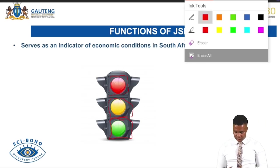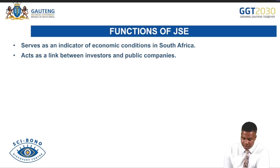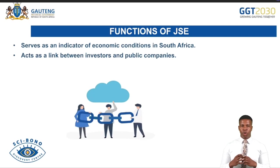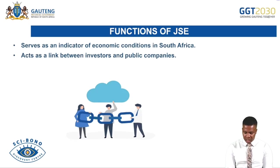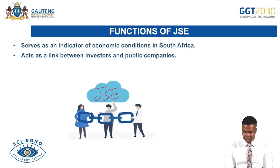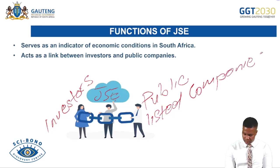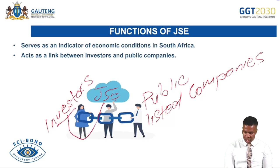Another function of the JSE is that it acts as a link between investors and public companies. The JSE serves as an intermediary — a middleman — connecting investors with publicly listed companies. People who want to buy shares are linked by the JSE to find out which companies are selling shares.